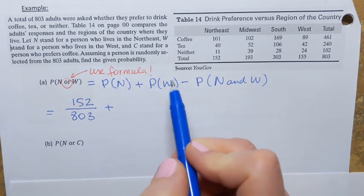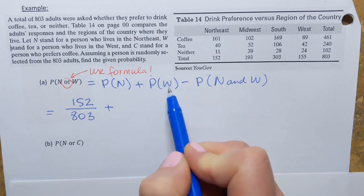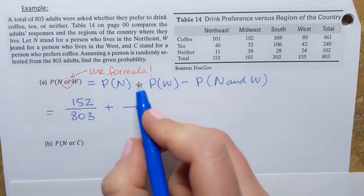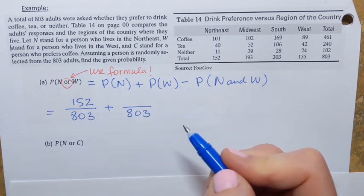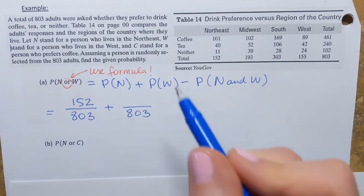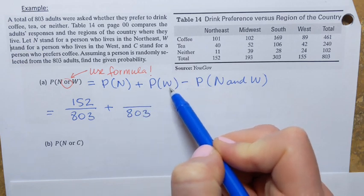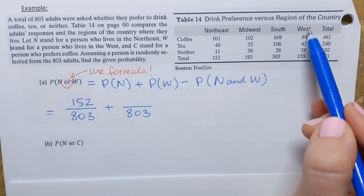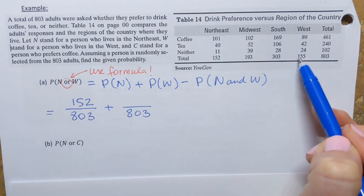Now we calculate the probability that the randomly selected person is from the west. The denominator is again 803. The numerator is the number of people from the west. From the table, the total number of people from the west is 155. So P(W) = 155/803.